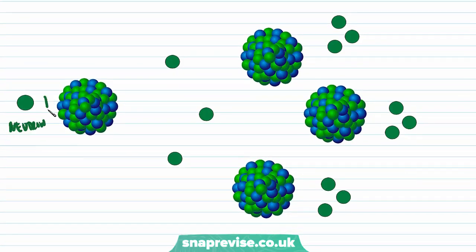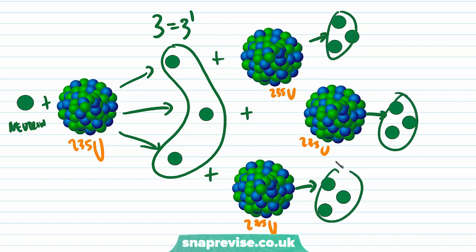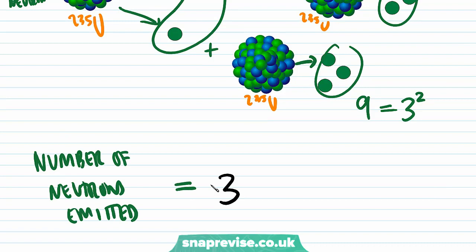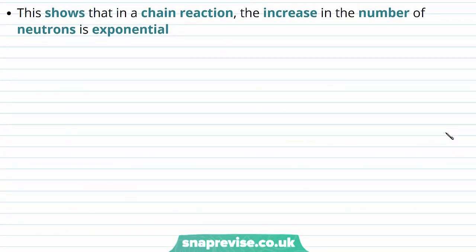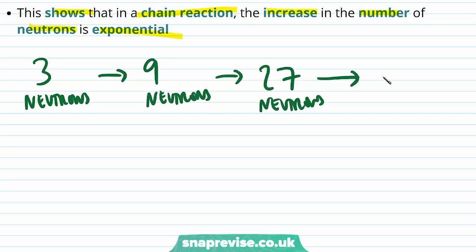In the first round of induced fission, we produce three neutrons, which is 3 to the power of 1. Each of these neutrons goes on to induce more fission, causing the production of three more neutrons each, meaning 9 neutrons are produced in total — equal to 3 to the power of 2. So the number of neutrons emitted equals 3^n where n is the number of generations, showing that the increase in neutrons in a chain reaction is exponential.